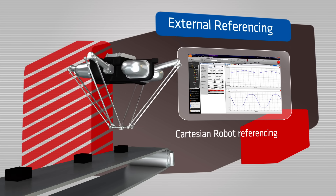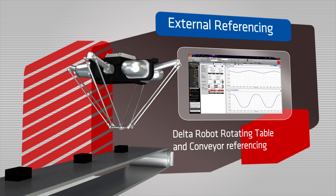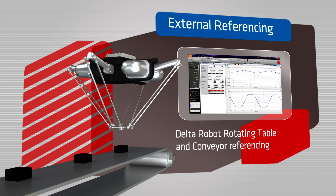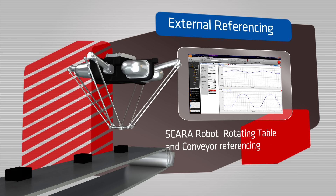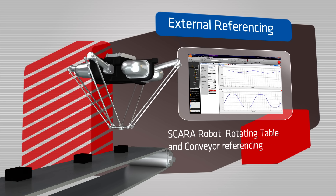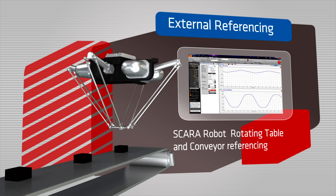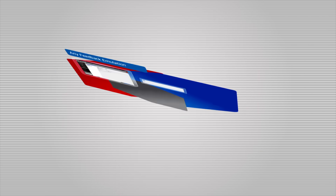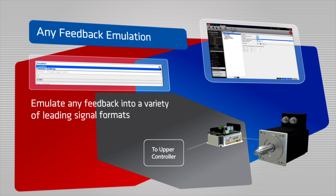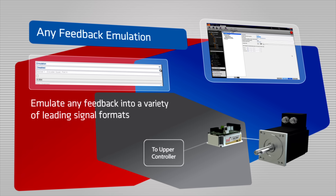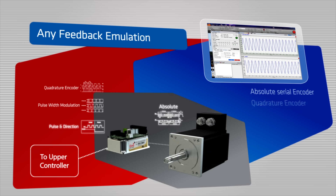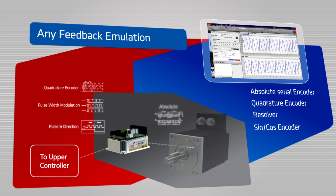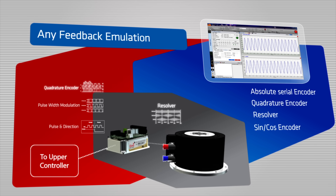ELMO's servo drives offer a wide variety of reference command options as a built-in standard for direct torque, velocity or position command referencing, or as a reference trajectory to e-cam and robot kinematics. ELMO's intelligent servo drives can emulate any feedback into a variety of leading signal formats, with easy access to this function through the drive setup screen.